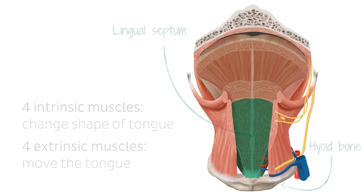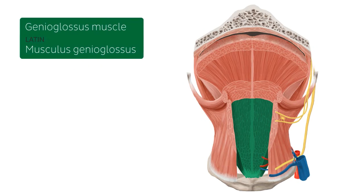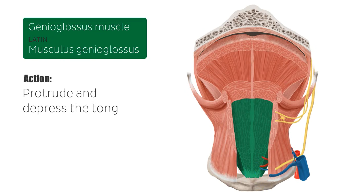Let's start by looking at the extrinsic muscles of the tongue. The first extrinsic muscle is the genioglossus. This muscle originates from the mental spines of the mandible and inserts at the bottom of the tongue and the hyoid bone. The main actions of the genioglossus are to protrude or stick out the tongue, and also to depress the tongue.